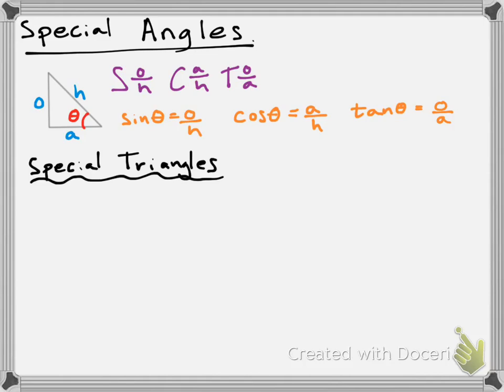So the first special triangle looks like this — it's going to be a triangle with two equal sides. The two sides that are perpendicular to one another are going to be equal. We have a special name for a triangle that has two equal sides: it's an isosceles triangle. So this is an isosceles right-angled triangle. Our goal is to come up with some side lengths and angles, which will allow us to find the sine, cosine, and tangent of certain special angles quite easily.